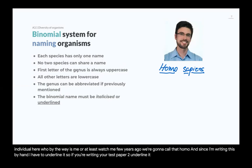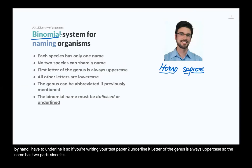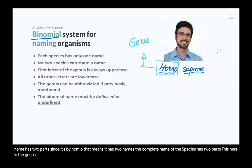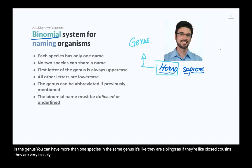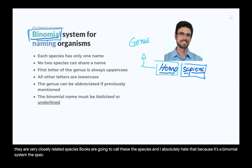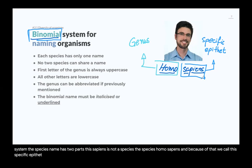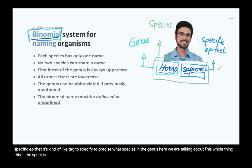The first letter of the genus is always uppercase. The name has two parts — since it's binomial, it has two names. This here is the genus; you can have more than one species in the same genus — they are like close cousins, very closely related species. Some books call this the species, and I absolutely hate that, because it's a binomial system. The species name has two parts. 'Sapiens' alone is not a species — the species is Homo sapiens. We call that second part the specific epithet.